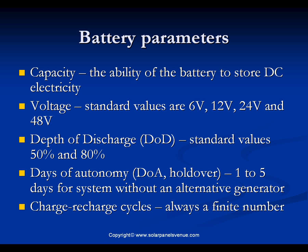The lower the depth of discharge, the longer the battery life. A battery regularly discharged down to 80% of its capacity will last shorter than a battery irregularly discharged to 50% of its capacity. For deep cycle batteries, depth of discharge is about 80%, and for flooded electrolyte batteries, depth of discharge is 50%. The most common value upon sizing a lead-acid battery bank is 50%.